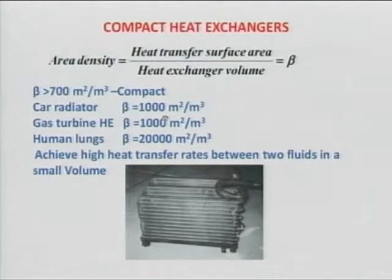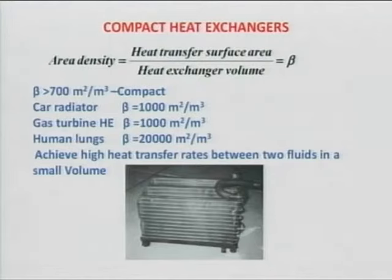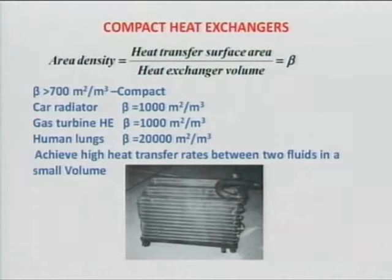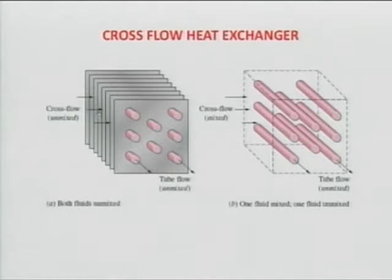Whenever the beta value is above 700, it is typically called a compact heat exchanger. I have included human lungs because anything human is highly efficient — nature knows how to optimize things by itself. The human lungs heat exchanger has a beta of 20,000, quite highly dense. That covers area density, and of course there are cross flow heat exchangers as well.